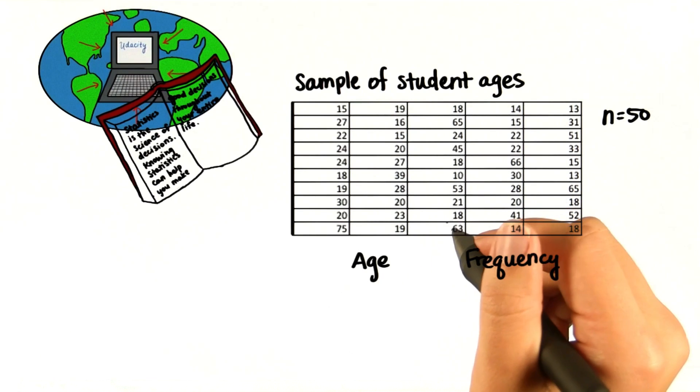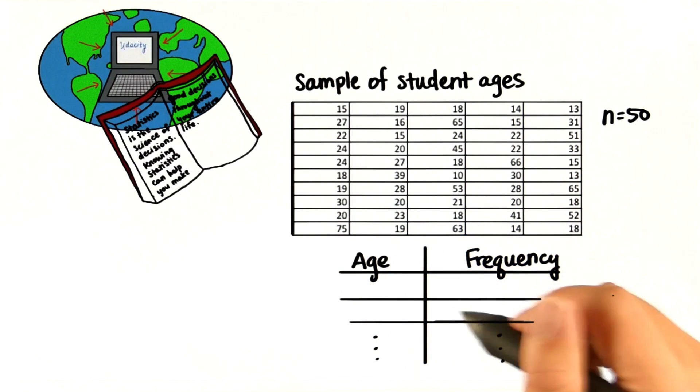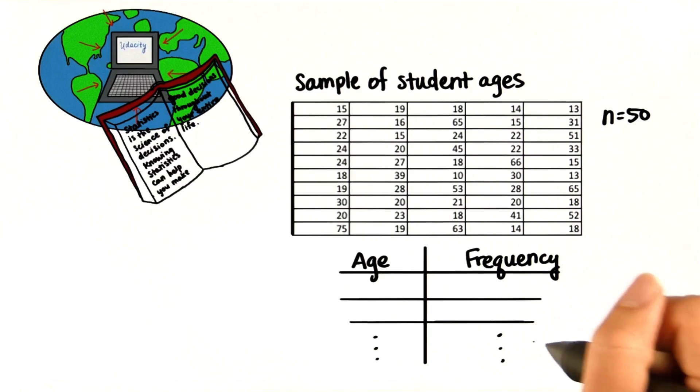So instead of having country in the frequency data, we have age. How can we create this table? How many rows would you have?